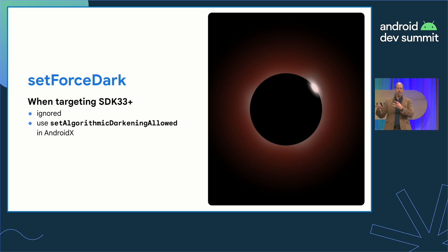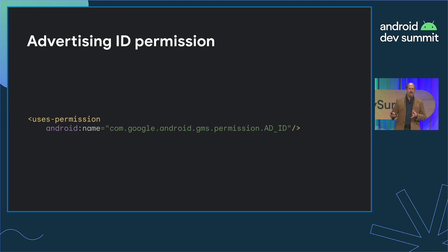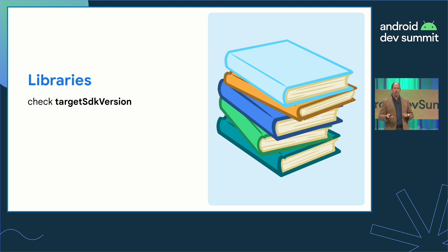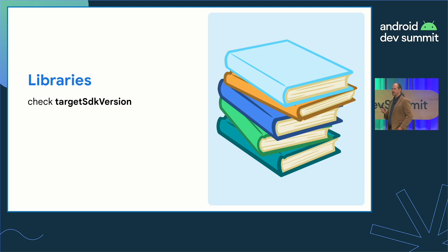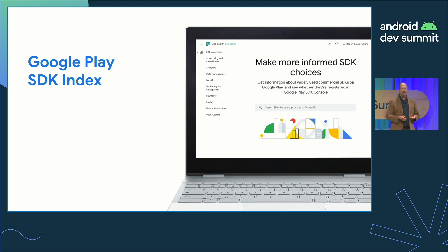When targeting SDK 33, the setForceDark method in WebView is now ignored. WebView always sets the media query prefers-color-scheme according to the app's light theme attribute, and you can still customize color theme behavior using setAlgorithmicDarkeningAllowed in AndroidX. Finally, apps targeting SDK 33 or higher that use advertising IDs need to request the AD_ID permission in the manifest — if you're using an advertising SDK that targets SDK 33, it will hopefully add this automatically via its library manifest. This brings up a key point: check the target SDK version of any SDKs or libraries you use, especially pre-compiled libraries that haven't been updated for recent behavior changes. You can use the Google Play SDK Index to see the target SDK level for many commercial SDKs.